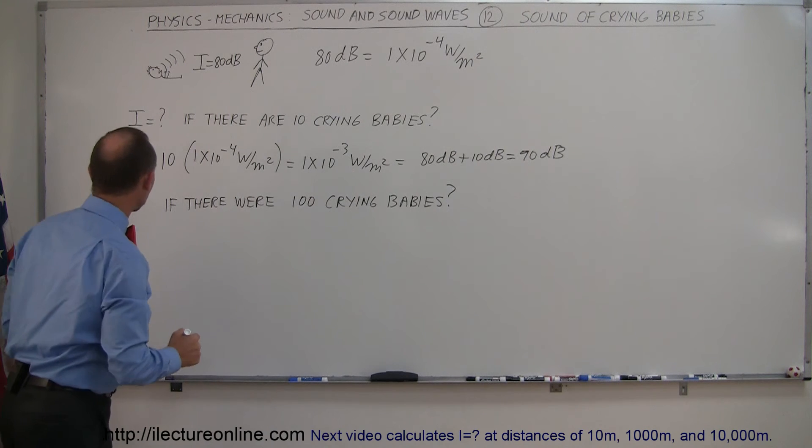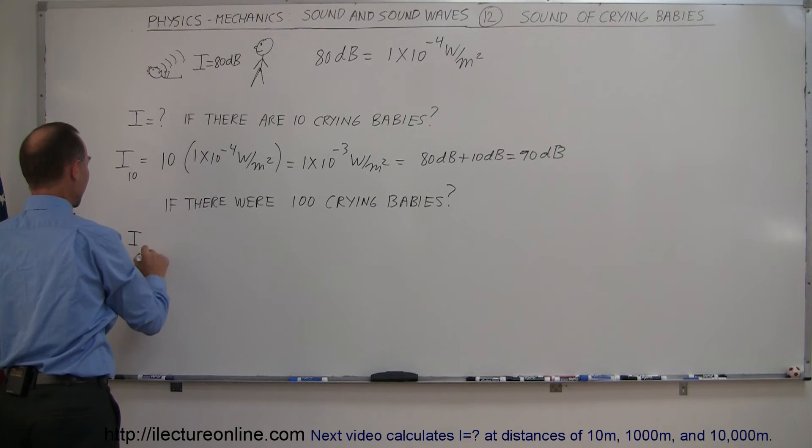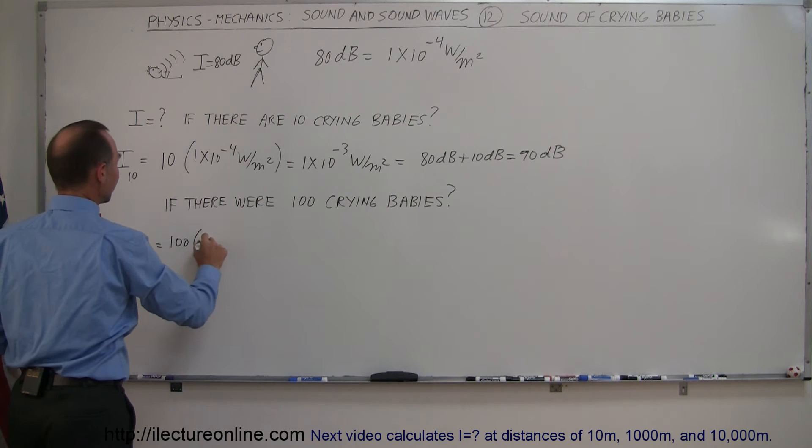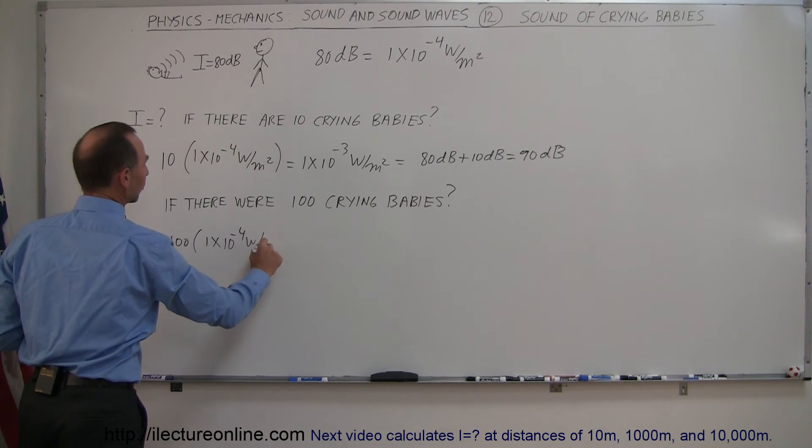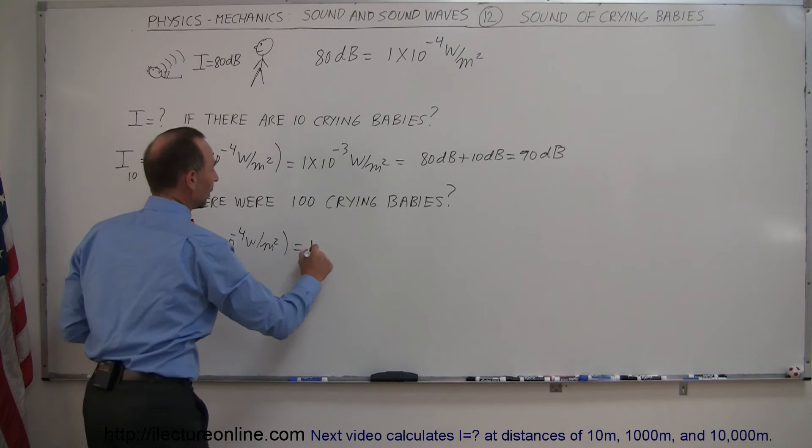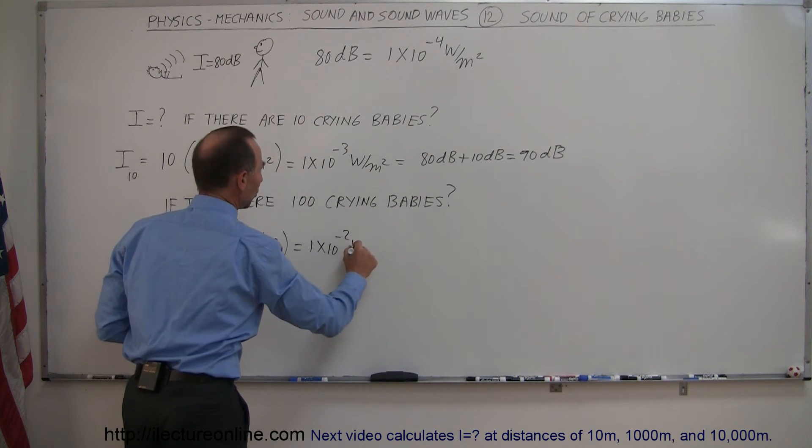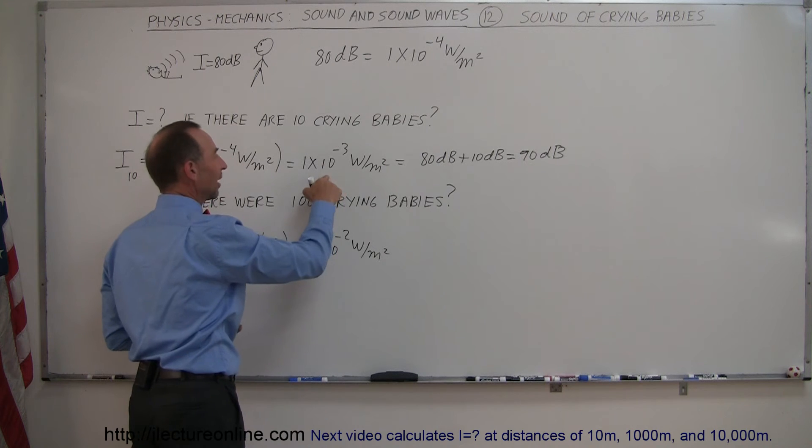Let's take a look. The intensity of 100 babies would be 100 times the intensity of a single baby, 1 times 10 to the minus 4 watts per square meter, and that would be 1 times 10 to the minus 2 watts per square meter.